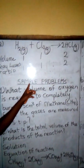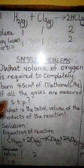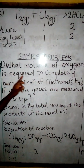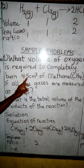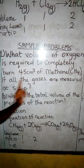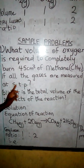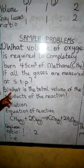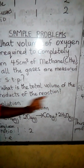Now we go to the sample problems. Number one: What volume of oxygen is required to completely burn 45 cm³ of methane? If all the gases are measured at STP, what is the total volume of the products of the reaction?